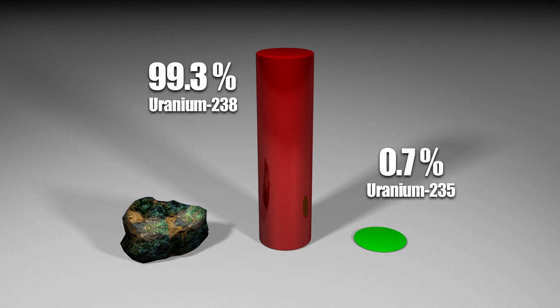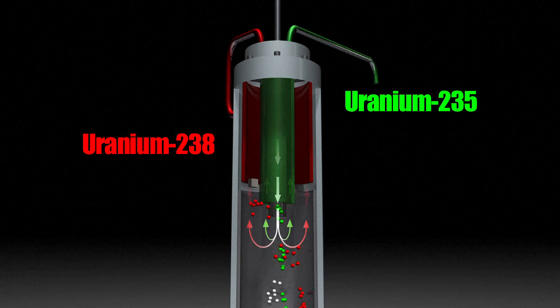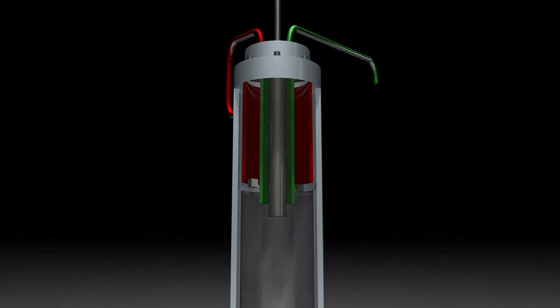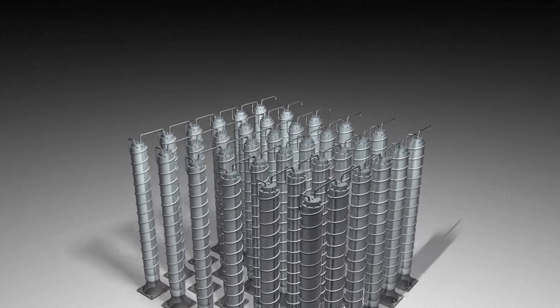Only the latter is used to produce nuclear energy. To separate the two, centrifuges are used. The heavier U-238 is discarded and the lighter U-235 is re-injected into the next centrifuge. Many centrifuges are needed to obtain a significant amount of usable Uranium-235.